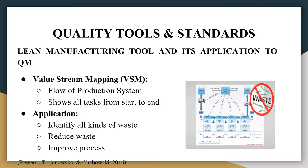So how does the lean manufacturing tool apply to quality management, quality assurance, and quality control? The answer is really through the different methods of lean manufacturing. One of the methods is value stream mapping, which is a graphical display of material flow and information of the production system. It shows its task from start to finish, allowing us to identify waste throughout the process, eliminate the waste, and also improve the process.